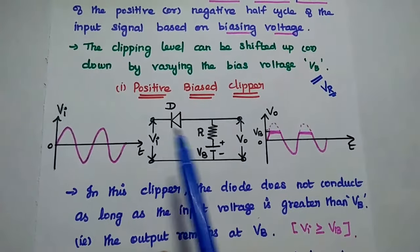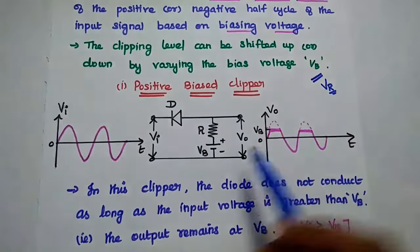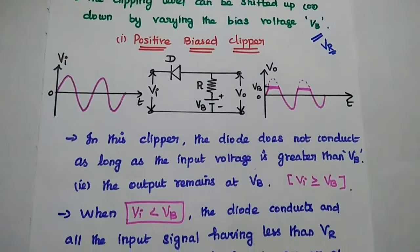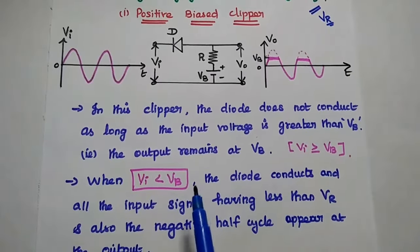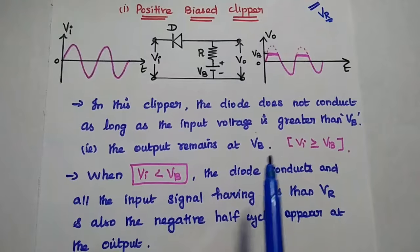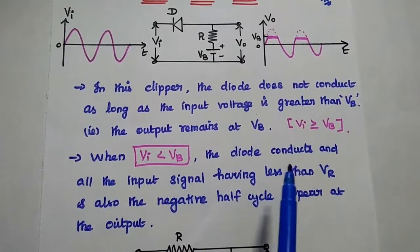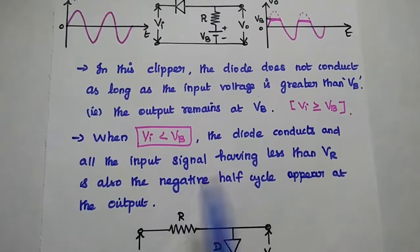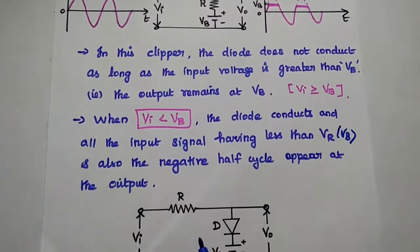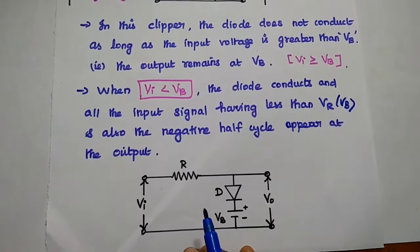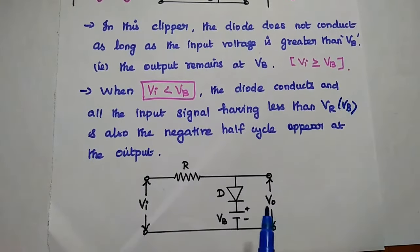Whenever the input voltage is greater than the biasing voltage, it is clipped off. The diode does not conduct as long as the input voltage is greater than the biasing voltage, so the output remains at the biasing voltage level. Whenever the input voltage is less than the biasing voltage, the diode conducts, and all input signals having less than the reference voltage — as well as the negative half cycles — appear at the output. This is the biased positive shunt clipper circuit.